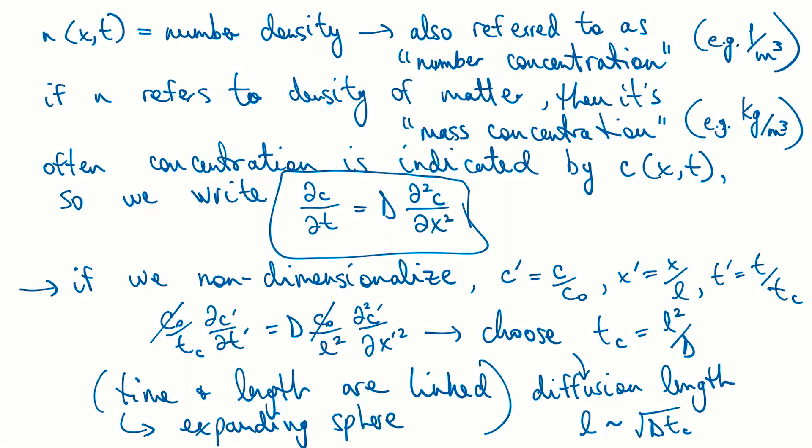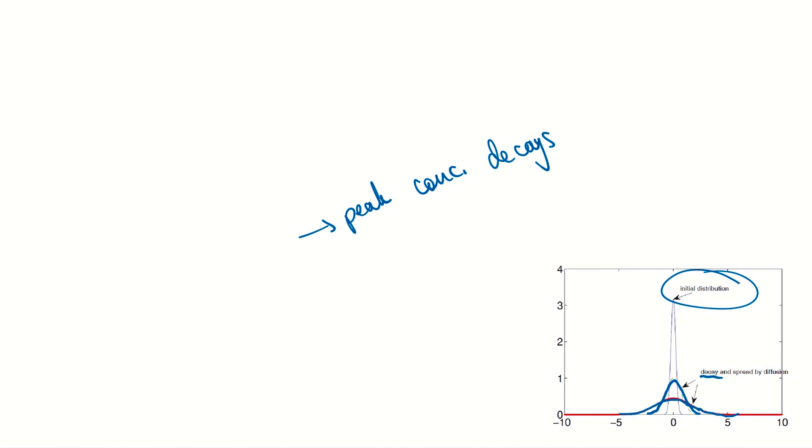Looking at a plot of this diffusive behavior: the initial distribution shows a sharp peak, which decays forward in time. The peak concentration decreases while the width of the distribution increases, but the area under the curve remains constant because we conserve mass. It decays from the initial sharp peak down to a broader, flatter distribution.